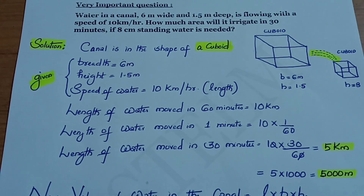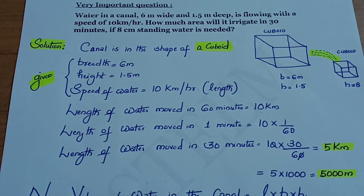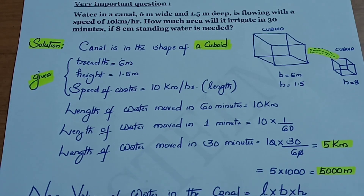Calculating: 10 × 30/60 — cancel the zeros — 30/60 simplifies to 1/2, giving 5 km. Converting to meters: 5 × 1000 = 5,000 meters. So the length of water moved in the channel in 30 minutes is 5,000 meters.